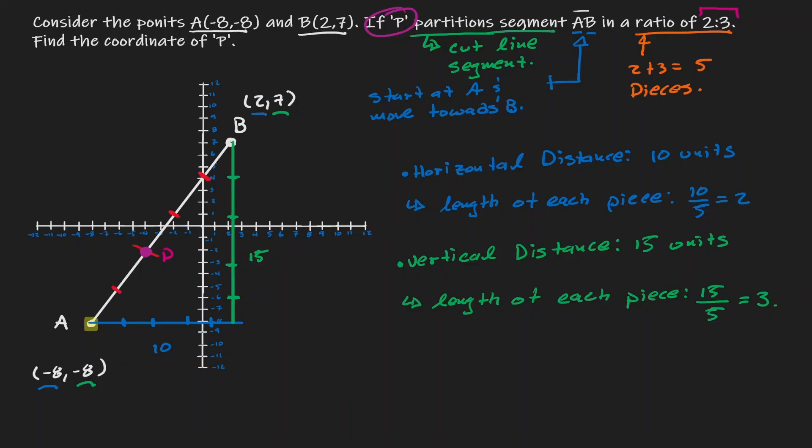Remember that we start at A. If we want to find the exact location for point P, we need to move 2 of those pieces along the diagonal line. This is the same as moving 2 pieces to the right and 2 pieces up.